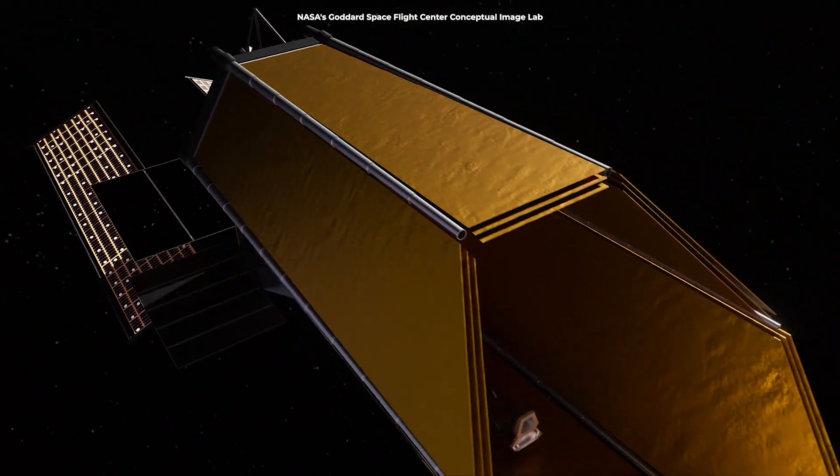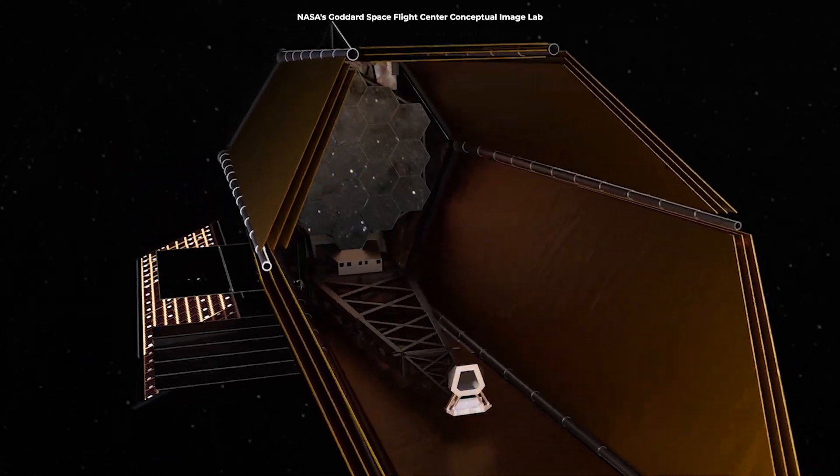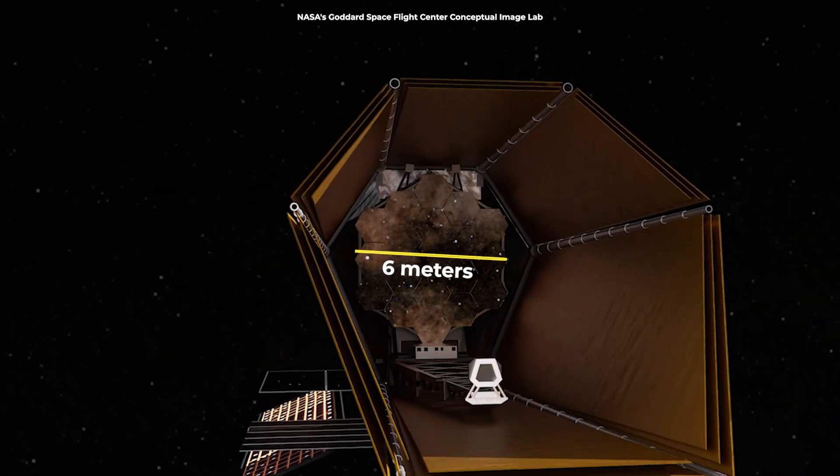Imagine a telescope with a mirror as large as Webb's, about six meters across. But instead of looking at the infrared universe, it's specifically engineered to stare directly at planets around other stars and look for signs of life.